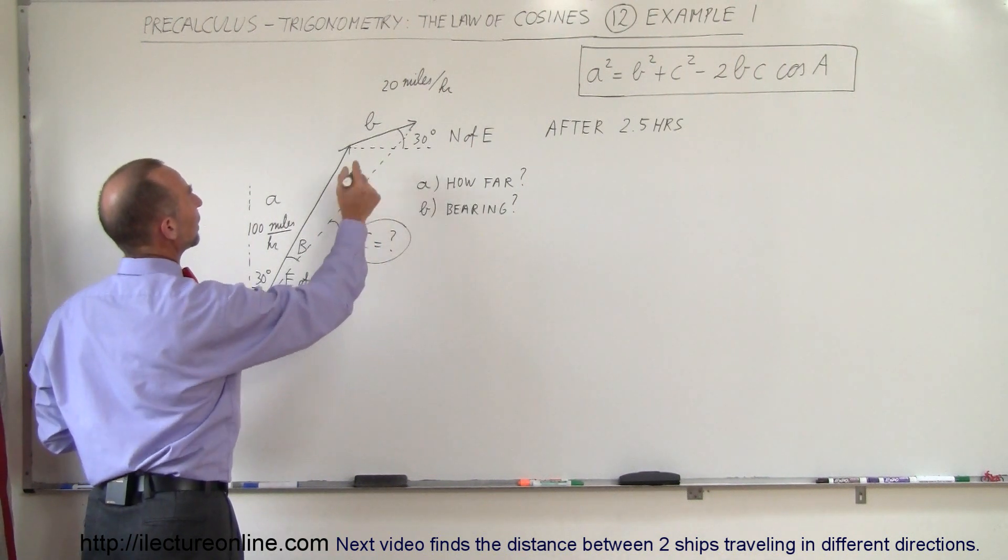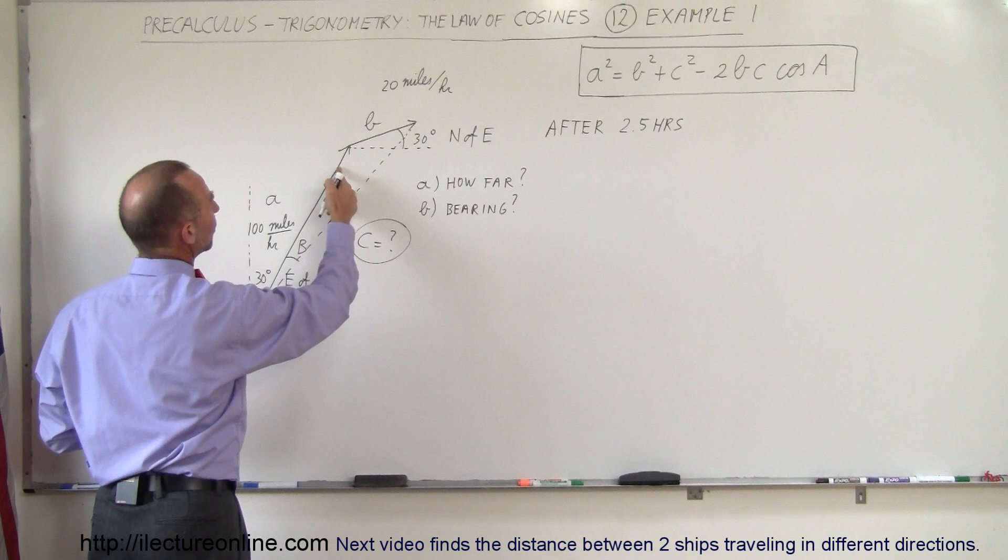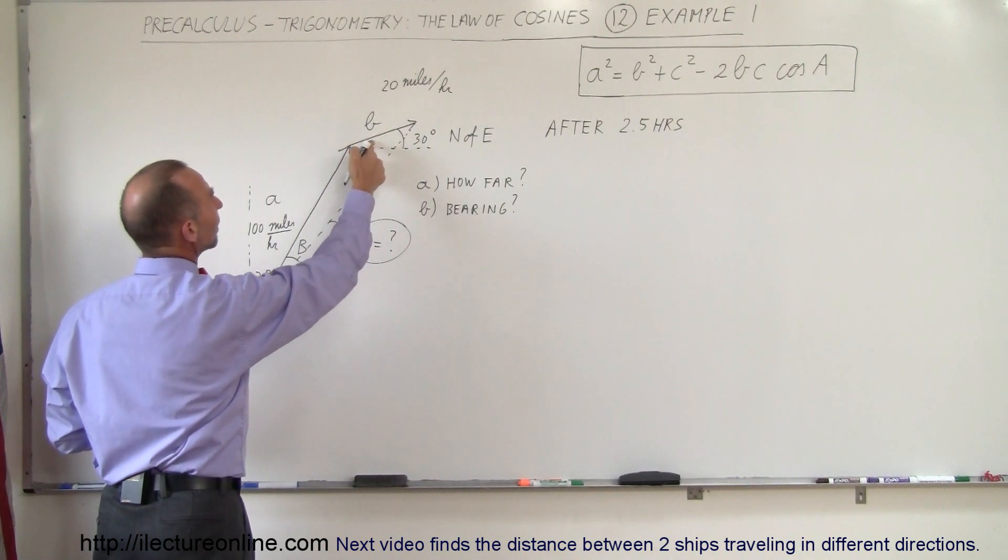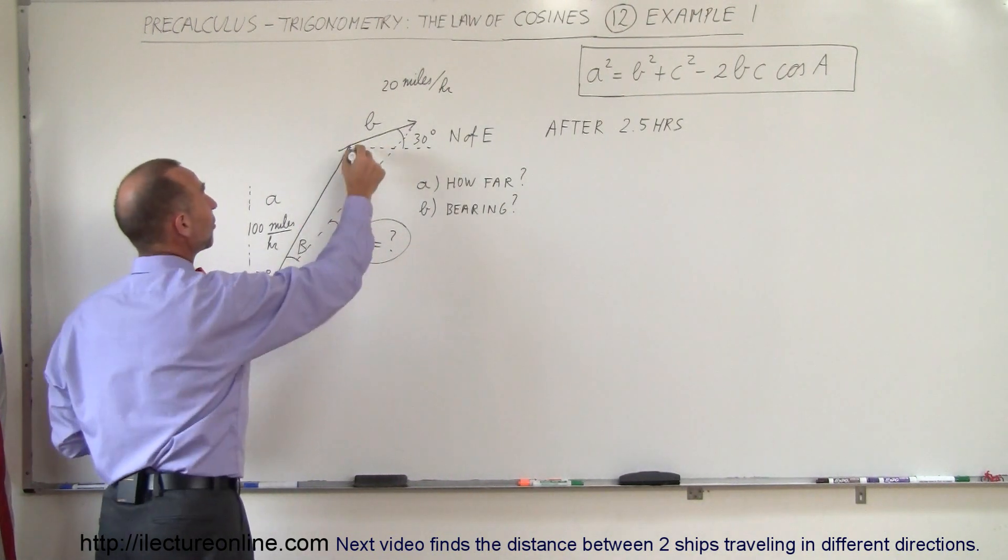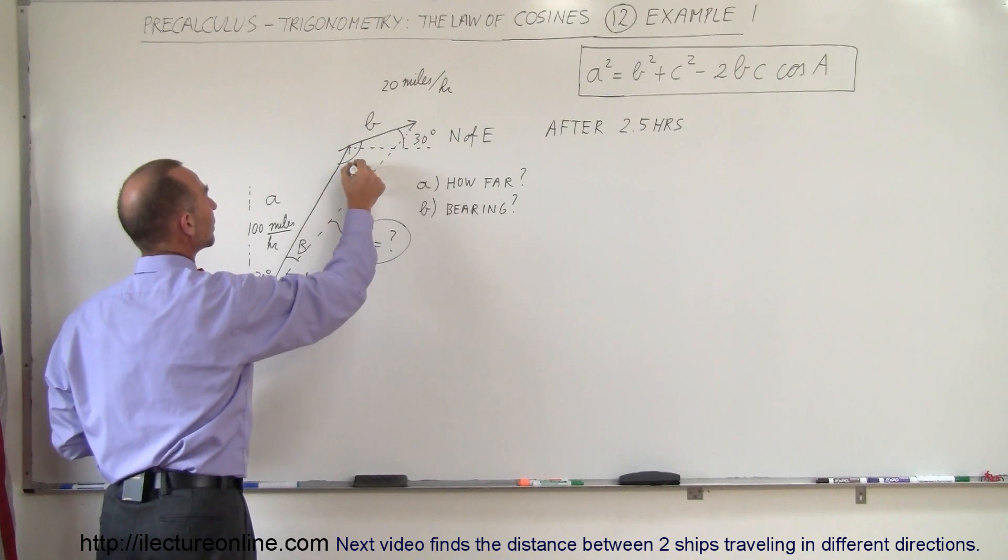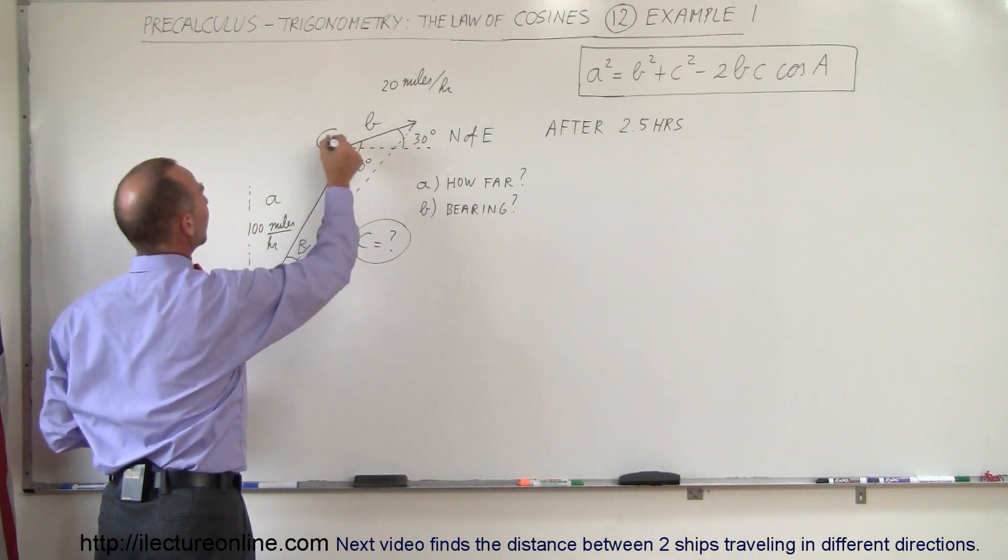Well yes, we kind of do because this is 30 degrees, so that would be 30 plus 90 plus 30, so 60 plus 90, so this is a 150 degree angle and that would be angle C.